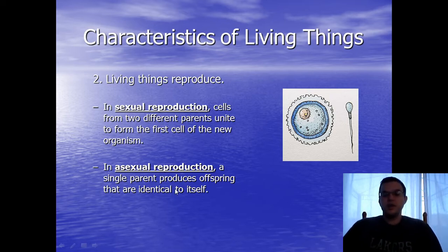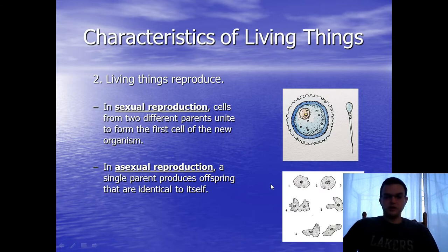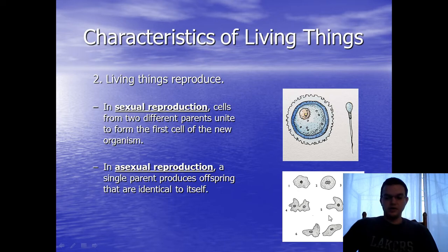With asexual reproduction, a single parent produces offspring that are identical to itself. An example is single-celled organisms, where the DNA gets copied and the cell splits into two identical cells. If we reproduced asexually, we'd all look like our parents, and our parents would look like our grandparents — essentially, going through the whole chain, we'd all look the same. Living things must have this ability to reproduce.